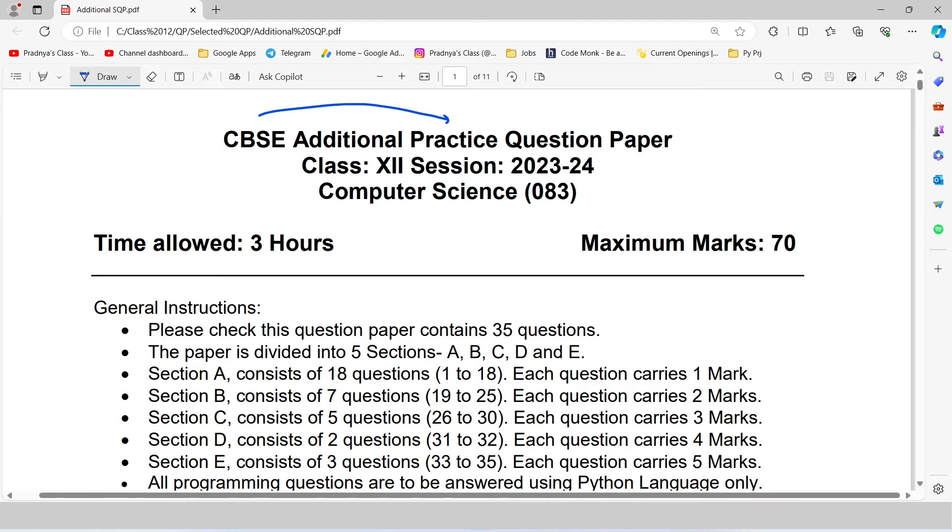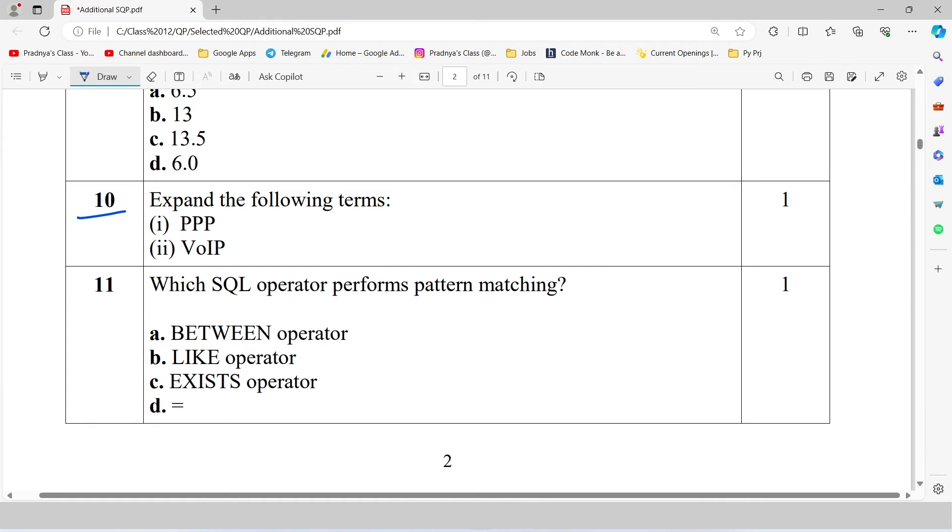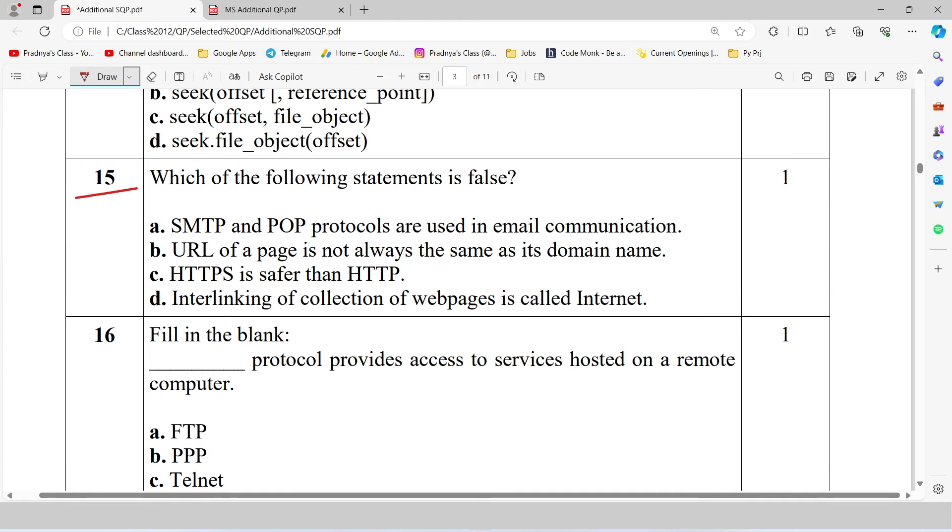Here is the additional practice question paper issued by CBSE for the session 23-24. Let's check out some questions from these two. Here is the question based on computer networks. We need to expand the following term. PPP is point to point protocol and VOIP is voice over internet protocol.